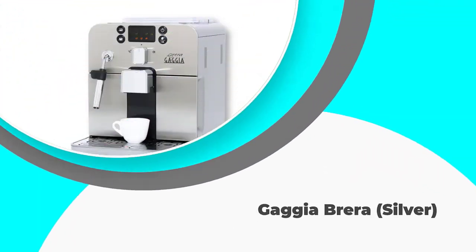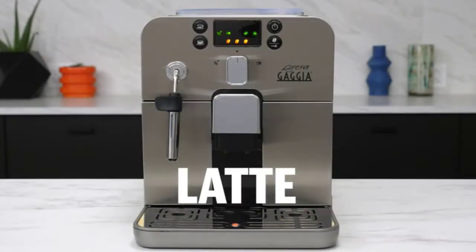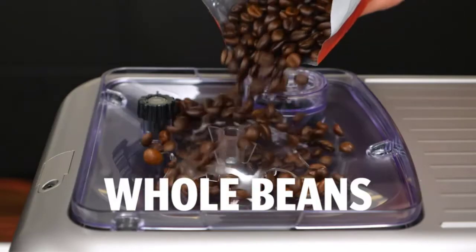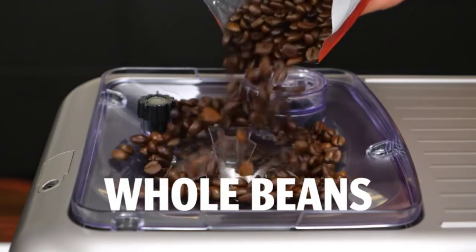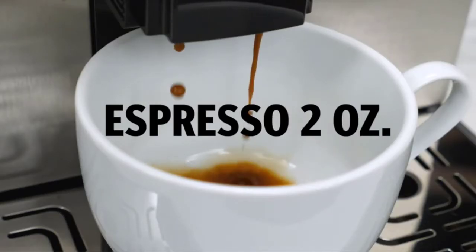Number 3: Gaggia Brera Silver. The Gaggia Brera is a product of Italy and one that oozes quality. Most of the latte maker components are easy to reach from the front, to remove, and to clean. This makes maintaining the machine a breeze.